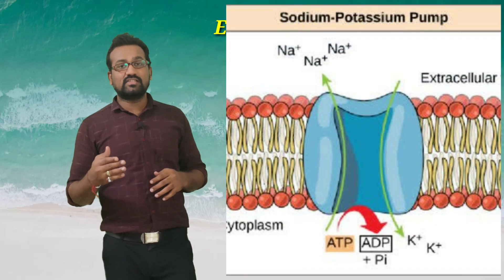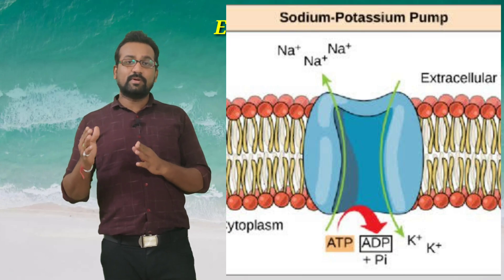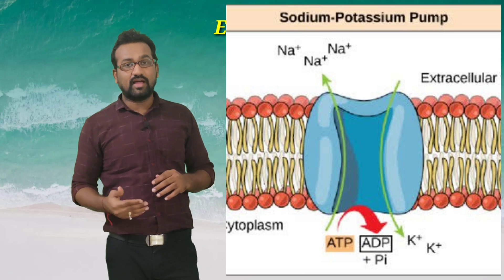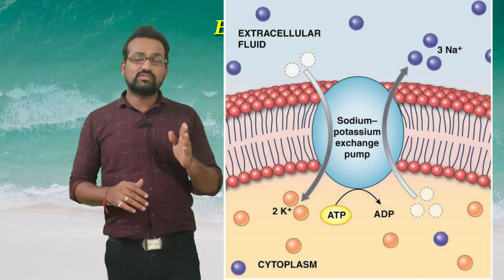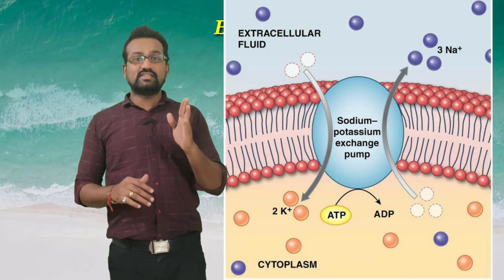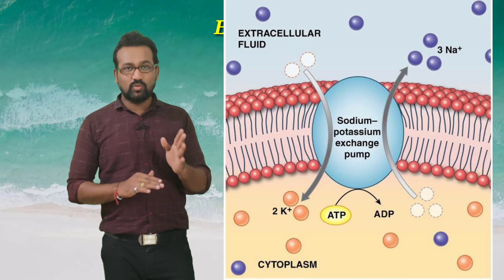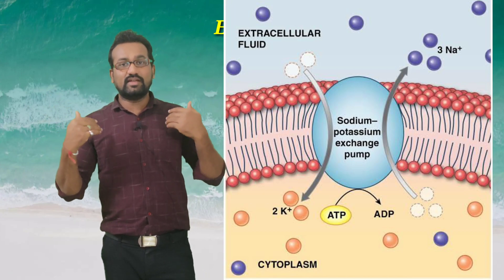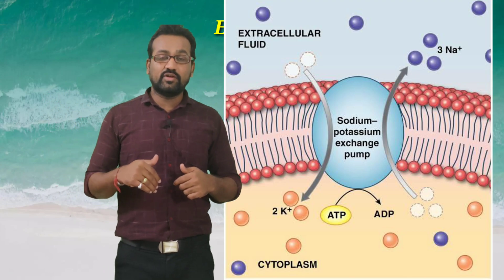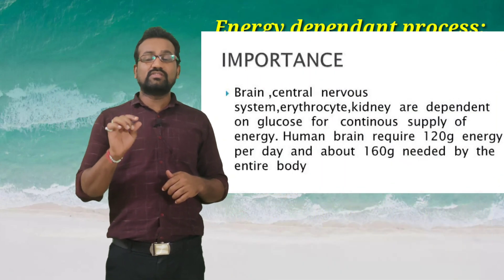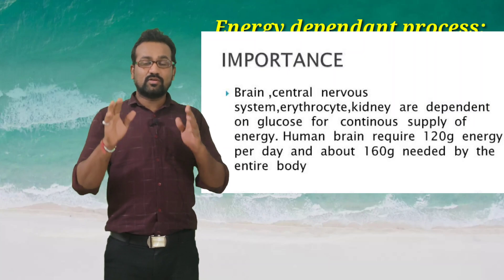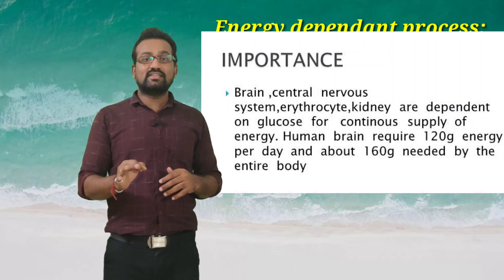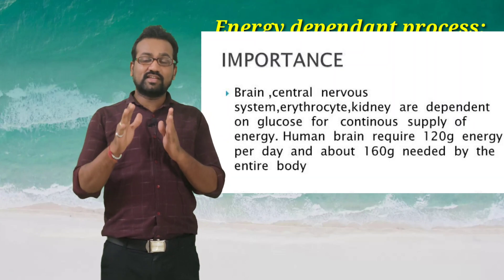A very famous example is the sodium-potassium pump, known as a pump because it exchanges sodium ions for potassium ions. Generally inside the cell, sodium ion concentration is lower and potassium ion concentration is higher. To maintain this state, out of the energy derived from the approximately 160 grams of glucose we require in 24 hours, one third of that energy is utilized just to maintain this ionic state.